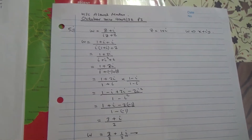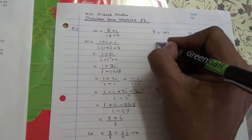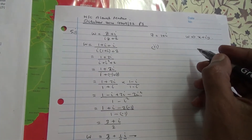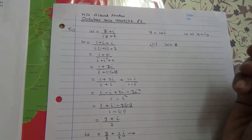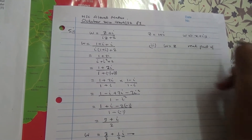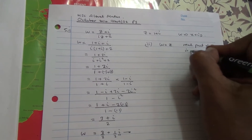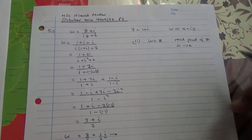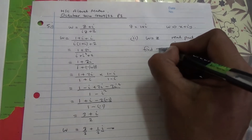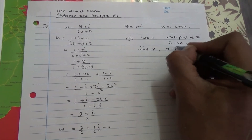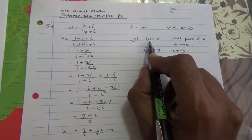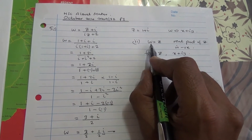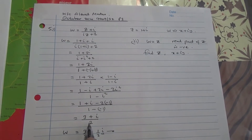Now for the second part. Given instead that W equals Z and the real part of Z is negative, find Z, giving your answer in the form X plus iY where X and Y are real. So W was given as (Z plus i) over (iZ plus 2), and W equals Z.